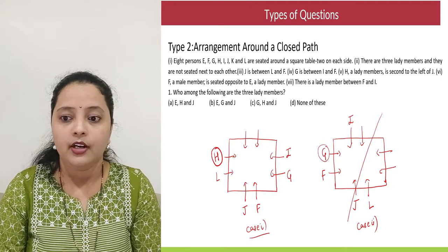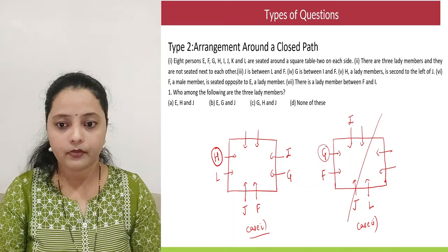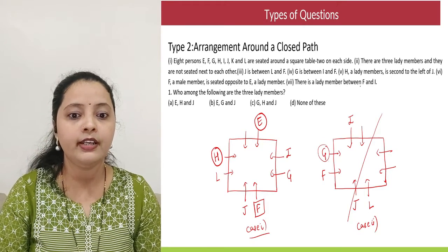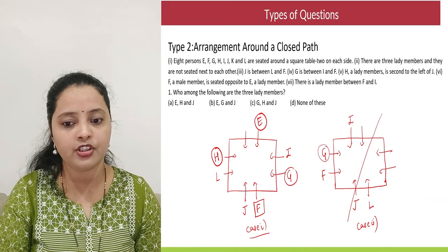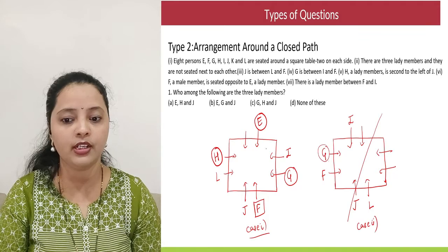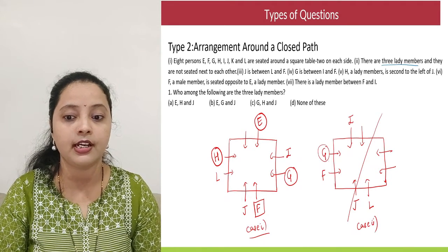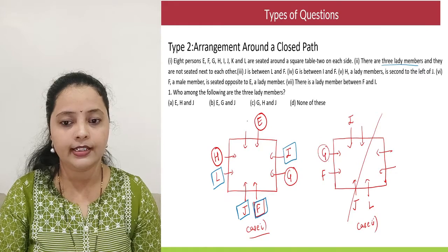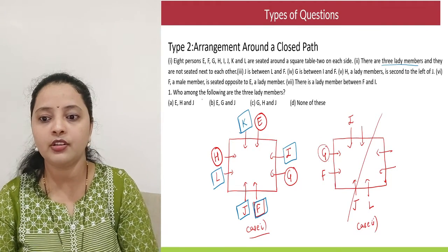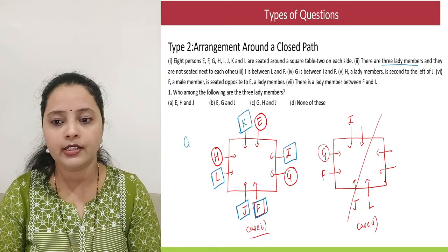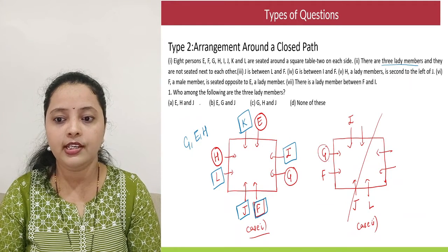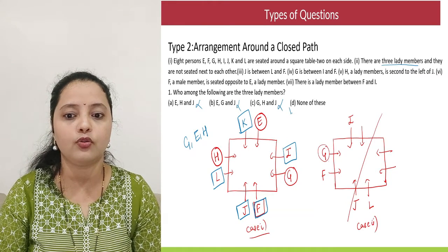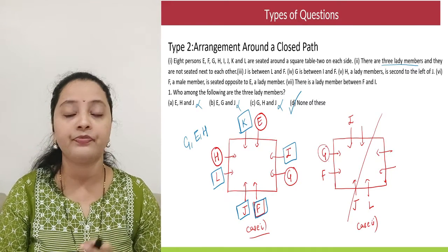F, a male member, is seated opposite E, a lady member. So F is male and E is female. There is a lady member between F and I — that is G, so G is also a lady member. The question states there are exactly three ladies. So H, E, and G are the three ladies, meaning I, J, F, and K are all males. The question asks: who are the three lady members? The answer is G, E, and H. Checking the options, none of the given options list exactly G, E, and H — so the correct answer is none of these.